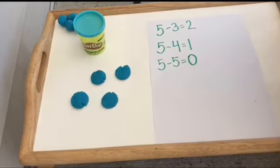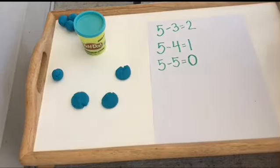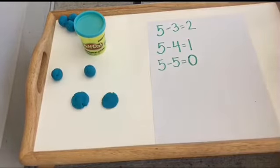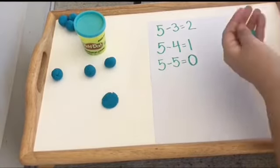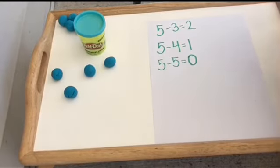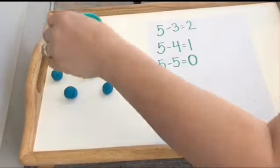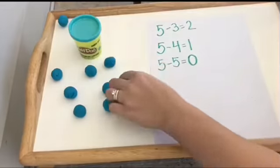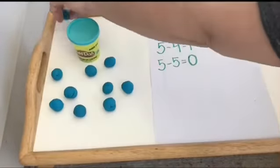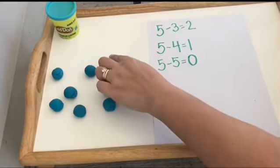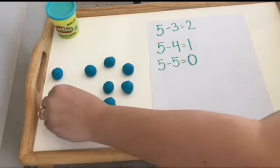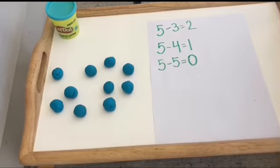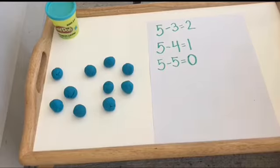Now I'm going to do some bigger numbers. I'm going to take all of my blue Play-Doh spheres here. Rolling them back up a second. Let's see how many there are. 1, 2, 3, 4, 5, 6, 7, 8, 9, 10. Okay, so this time I'm starting with 10.